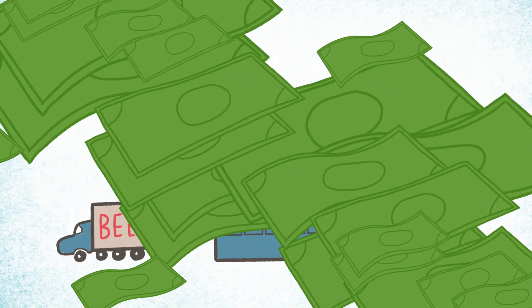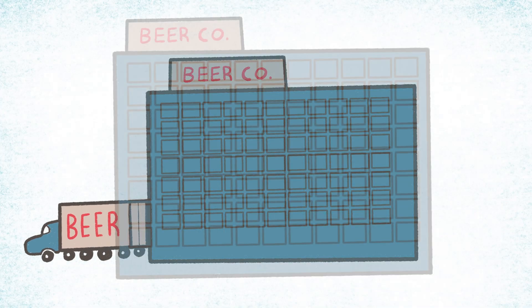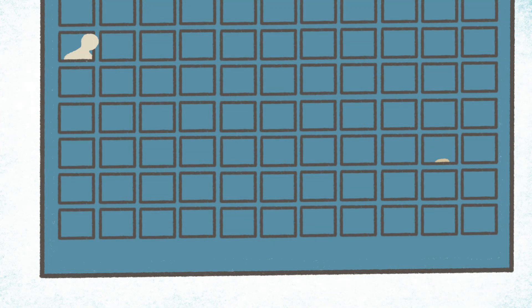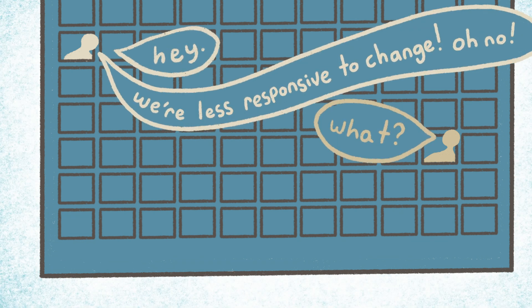Common sense says cash flow should influence how much inventory firms buy and when. But as firms grow, decision makers in finance and operations communicate less and less, making them less responsive to change.